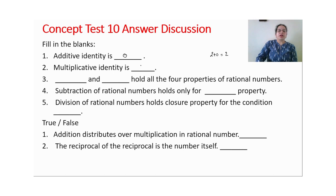Multiplicative identity is 1. You multiply by 1 to any number, your answer will be the same.